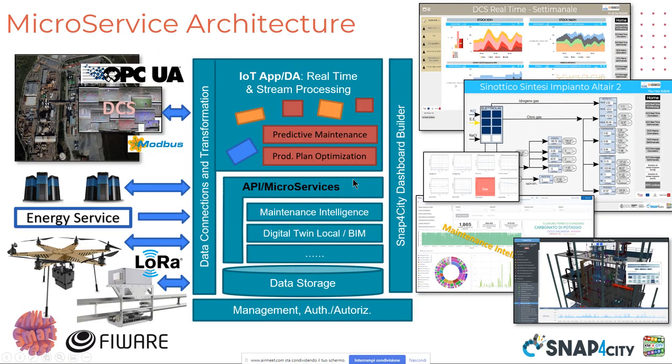The architecture is represented in these slides. This is a functional architecture based on microservices that exploit the FIWARE component Orion broker. We collect OPC-UA, UWA, and Modbus data from the field and also from administrative servers — the information regarding the new products and business to be produced by the plant.